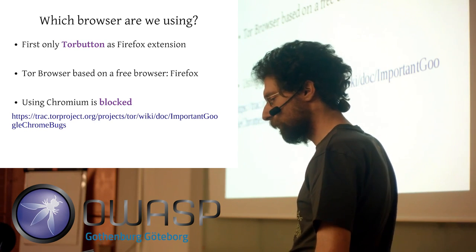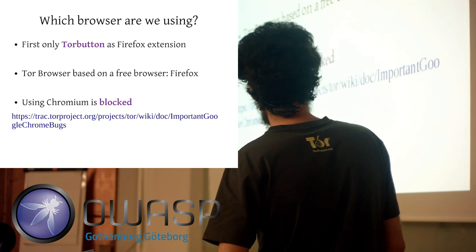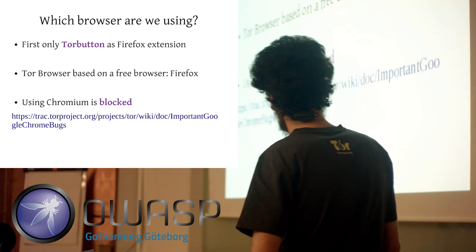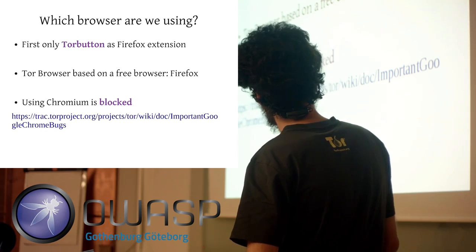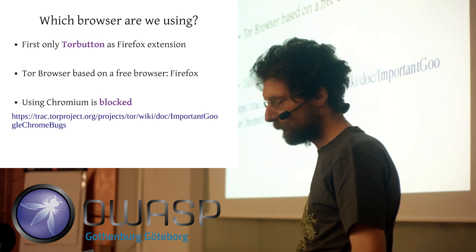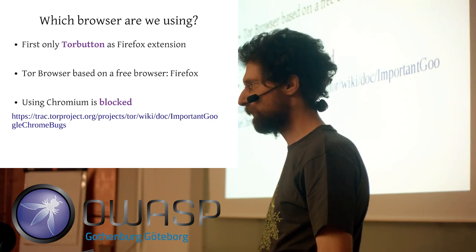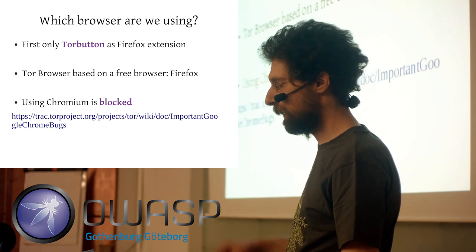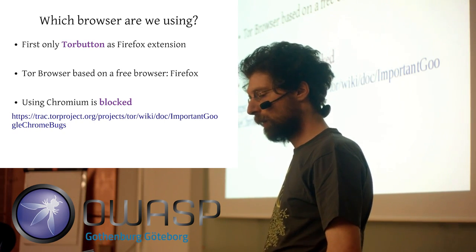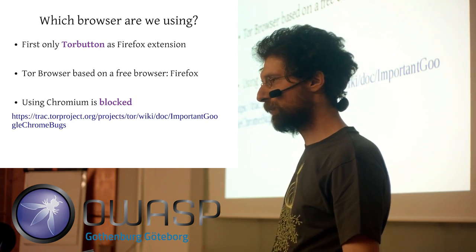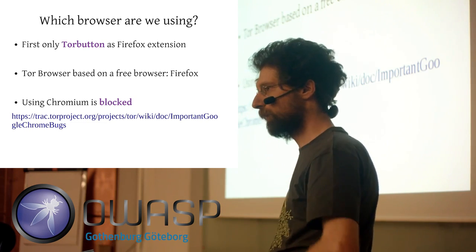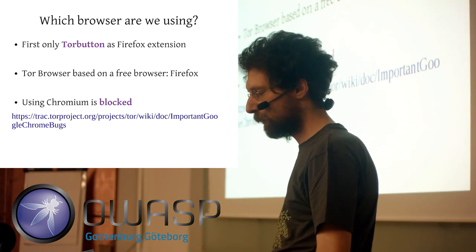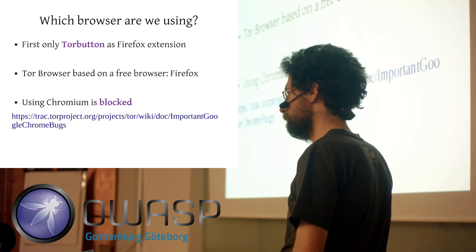You might ask yourself, why do we need a whole new browser for this kind of detection or protection? It turns out we had first a Firefox extension called Tor Button — a button in your Firefox browser where you can toggle on and toggle off your Tor usage. And this turns out to be a really bad idea for a couple of reasons.